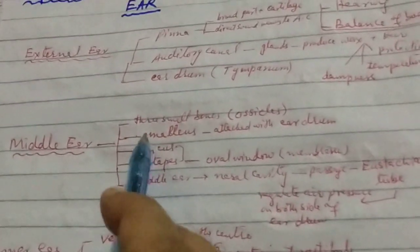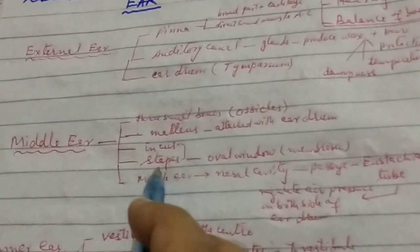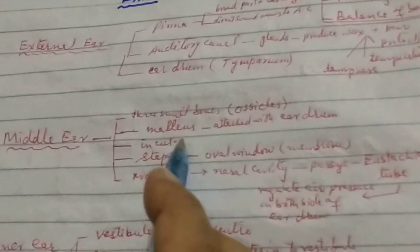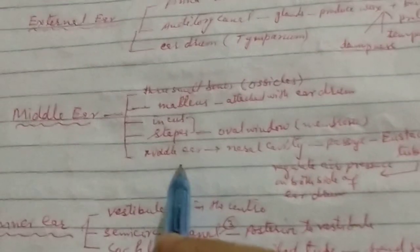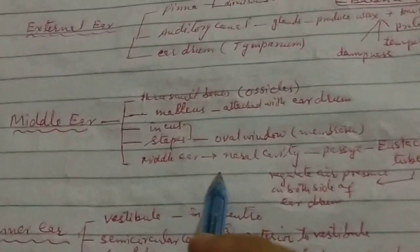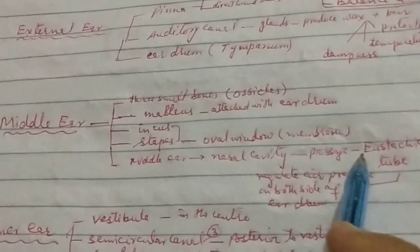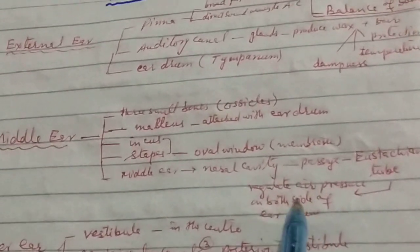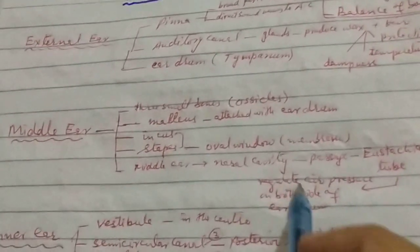In middle ear, there are three bones: malleus, incus, and stapes. In middle ear, the malleus incus stapes connect to the oval window membrane. In middle ear, there is the eustachian tube, which means that the ear pressure is maintained and controlled.